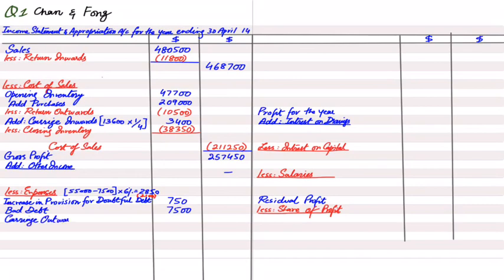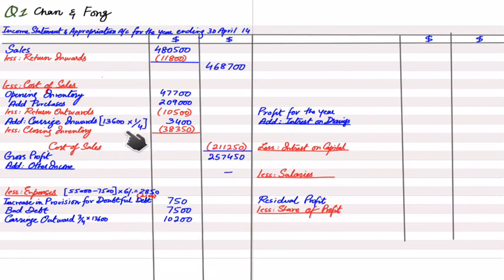For carriage outwards: three quarters of the 13,600 motor vehicle expenses relate to delivery. Alternatively, we can deduct the carriage inwards portion already calculated from the total 13,600 to arrive at the carriage outwards figure.